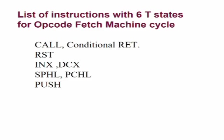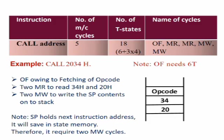Up until now we have seen all the instructions where the opcode fetch machine cycle is of four T states, but there are few instructions which have the opcode fetch machine cycle consisting of six T states. For example, these instructions are: CALL, conditional return, RST (reset instruction), INX RP or DCX, it may be M or RP, SPHL, PCHL, and PUSH. These are the instructions which require six T states for opcode fetch.